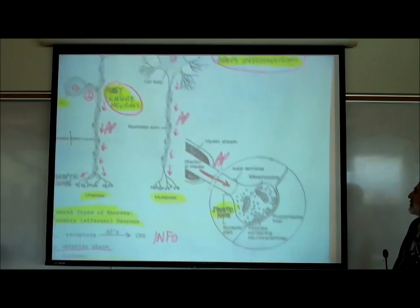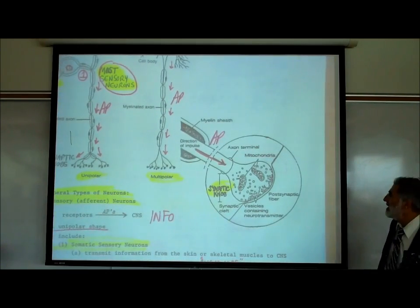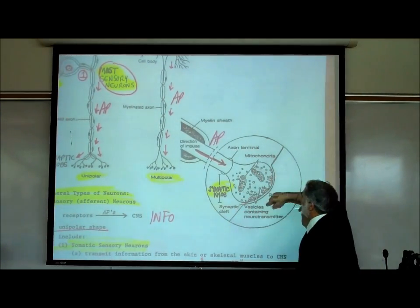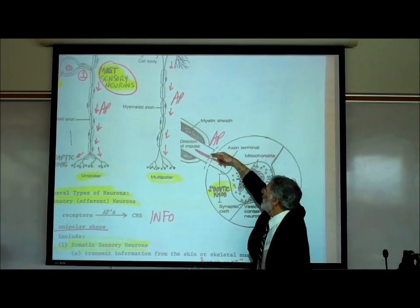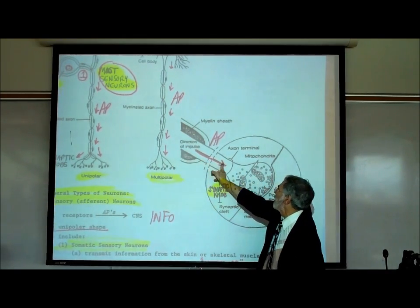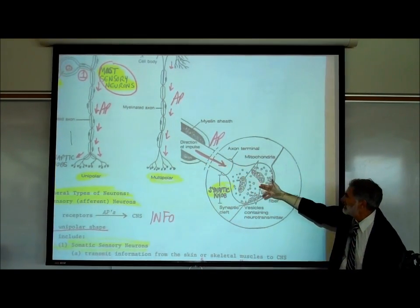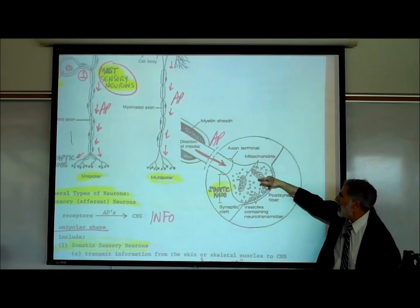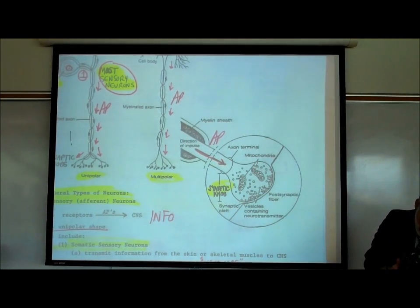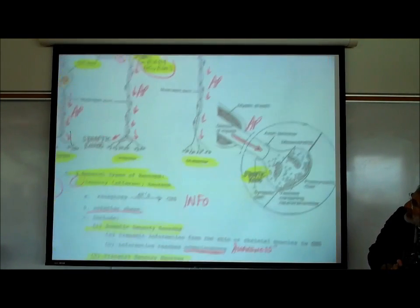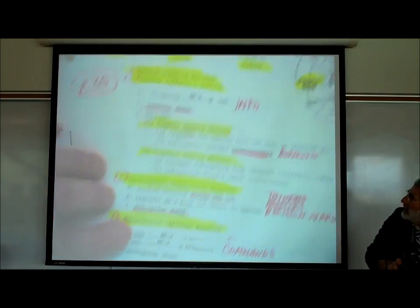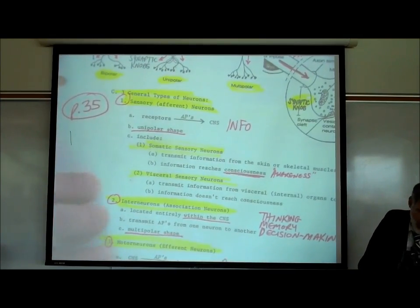This picture shows an enlarged view of the synaptic knob. When that action potential or nerve impulse is conducted into the knob, it causes the release of a chemical — the neurotransmitter. The rest of this we covered last week, but I'll quickly review it.